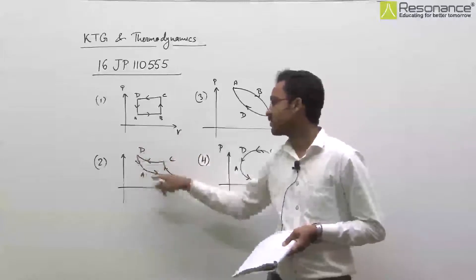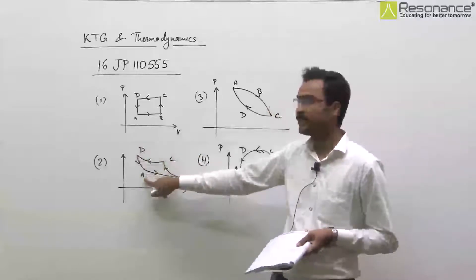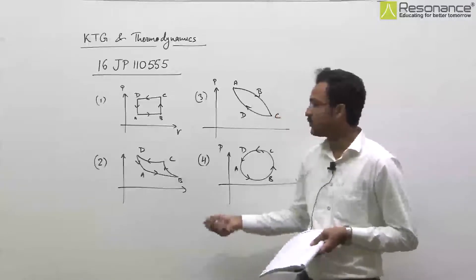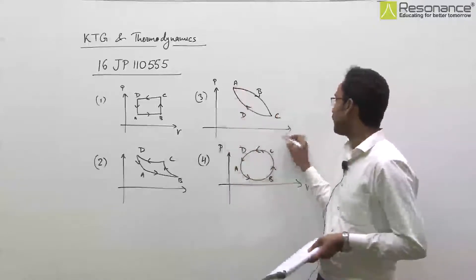After A, B, C, D, A processes, the gas returns to state A. We're being asked about the change in internal energy. In any of these graphs,